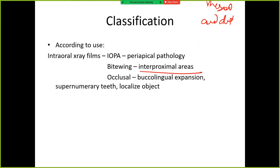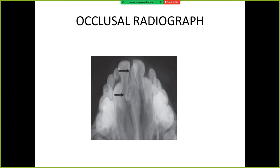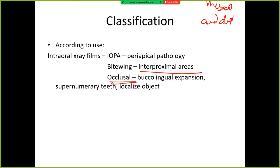This is also an intraoral radiograph. Then the occlusal radiograph — this is known as the occlusal radiograph. With occlusal radiography, we cannot determine whether a structure is buccal-lingual or mesial-distal. We can see some structure, but we cannot know the direction. So with occlusal radiograph, we can see buccal-lingual expansion, supernumerary teeth, and we can localize an object.